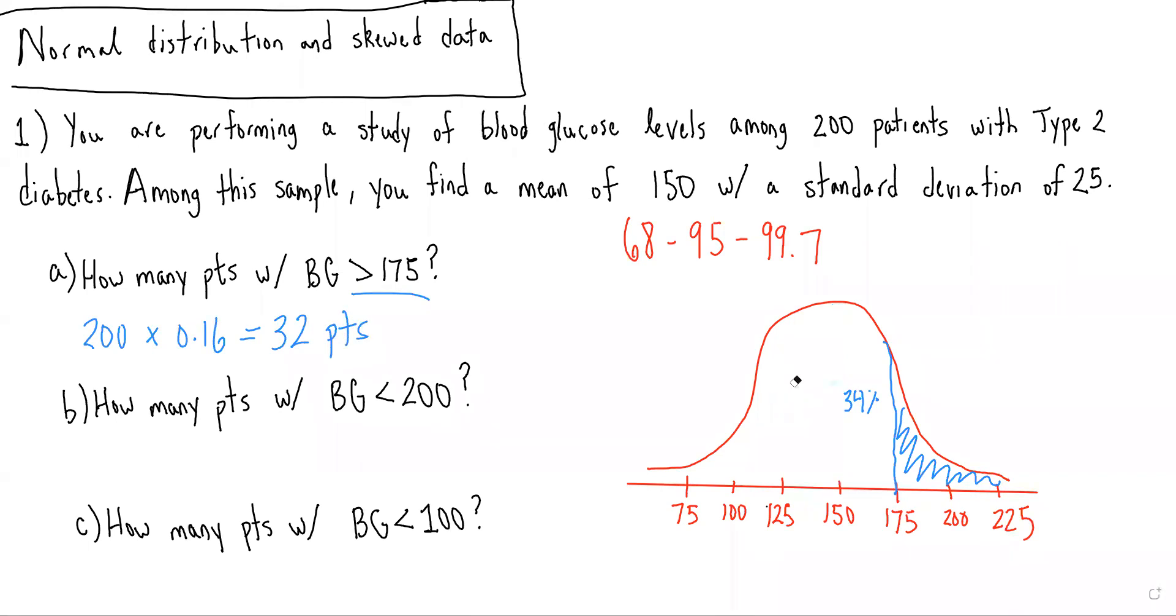Then we're asked, how many patients will have a blood glucose less than 200? So how many patients will have blood glucose to the left of 200?